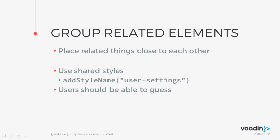Grouping related elements is another good practice. Whenever you have stuff that is related to each other, it makes sense for it to be in the same place or very close together. In Vaadin, you can use shared styles for that — so if you can't place them directly next to each other, you can at least theme them to make them look related. In general, your users should be able to guess what a particular part of your software does just by looking at stuff around that part.